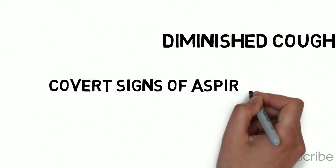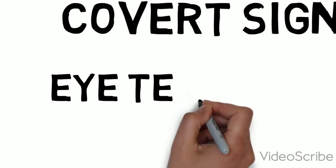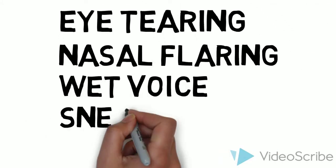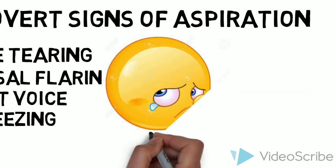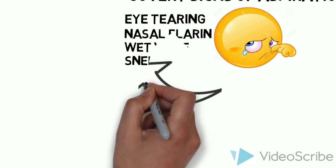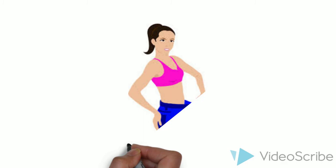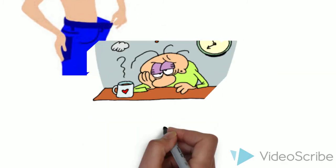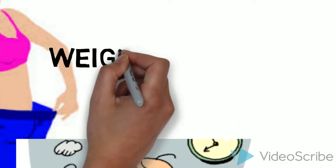This is when it becomes important to know the covert signs of aspiration. These include eye tearing, nasal flaring, wet voice, and sneezing. Unexplained weight loss, loss of appetite, and fatigue are also covert signs that may occur due to aspiration.